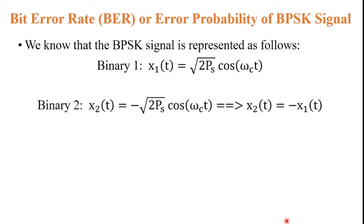We know that the expression of the BPSK signal is given by x(t) = √(2Ps) cos(ωct). For binary symbol 1, the carrier signal x1(t) = √(2Ps) cos(ωct), where ωc is the angular carrier frequency and Ps is the power of the signal — it has a 0° phase shift. For binary symbol 0, the carrier waveform is x2(t) = −√(2Ps) cos(ωct), which has a 180° phase shift. So, x2(t) = −x1(t).